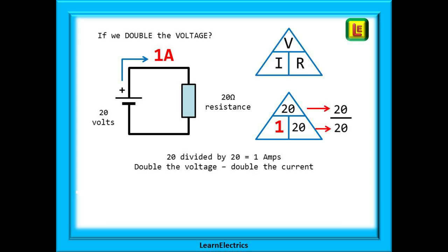What would happen to the current if we doubled the voltage? We'll keep the resistance the same, 20 ohms, but the voltage is now 20 volts. Follow the same Ohm's law method. Draw an empty triangle and write in what you know. We now have 20 volts divided by 20 ohms and this gives us one amp of current. We doubled the voltage and the current doubled.